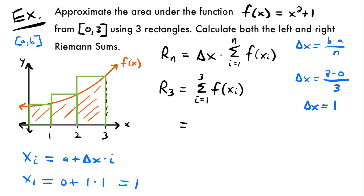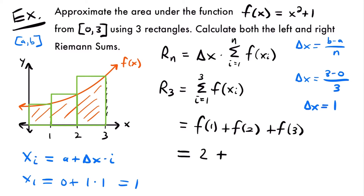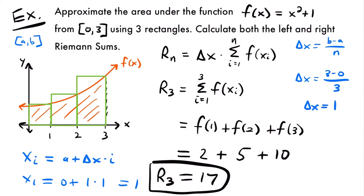The area equals f of 1 plus f of 2 plus f of 3. Plugging in: f(1) = 1 squared plus 1 = 2; f(2) = 2 squared plus 1 = 5; f(3) = 3 squared plus 1 = 10. So we have 2 plus 5 plus 10, which equals 17. That is R sub 3 — the approximate area under the function from 0 to 3 using right endpoints of three rectangles.